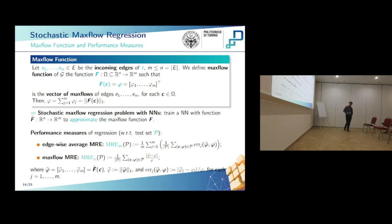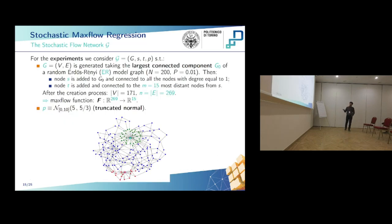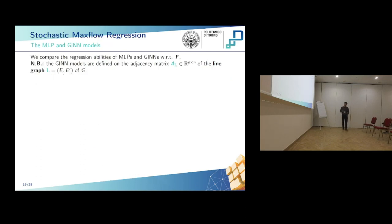We denote by phi-hat the predicted vector of fluxes. The network we consider is generated from a random Erdős–Rényi graph, characterized by a max flow function f that goes from R^269 to R^15. We highlight the sink and source of the network. We train both MLP architectures and GINN architectures to learn the max flow function. Since GINN models are defined to perform regression on nodes of a graph, we define them with respect not to the adjacency matrix A of the stochastic flow network but to the adjacency matrix A_L of the line graph — where edges become nodes and nodes become edges.